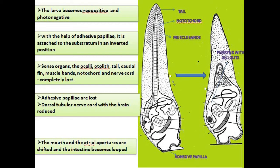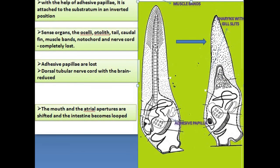Let us see the retrogressive metamorphosis. The Ascidian tadpole larva undergoes interesting changes during metamorphosis. The following changes occur simultaneously when the larva becomes geotactic and photonegative. The tail is completely reabsorbed. It attaches to the substratum in an inverted position with the help of the adhesive papillae. After attachment, the adhesive papillae are lost. The dorsal tubular nerve cord with the brain is reduced. The sense organs — the ocelli, the otocyst — the tail, caudal fin, muscle bands, notochord, and nerve cord are completely lost. As seen in this diagram, the notochord extends in the tail region, but here the tail is absorbed.